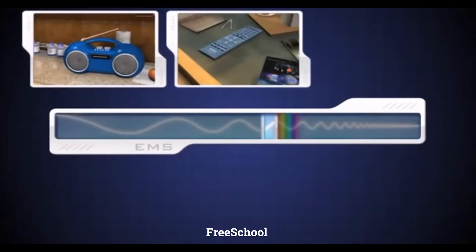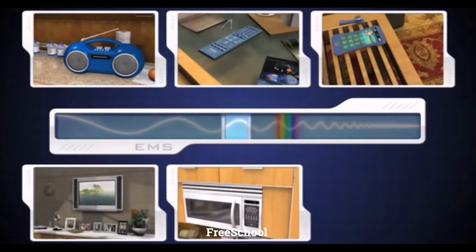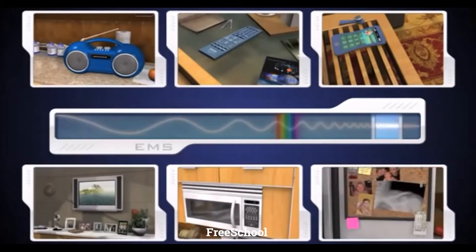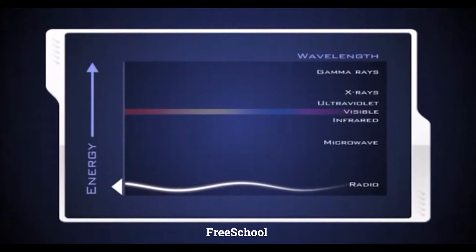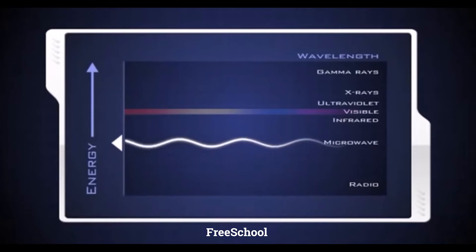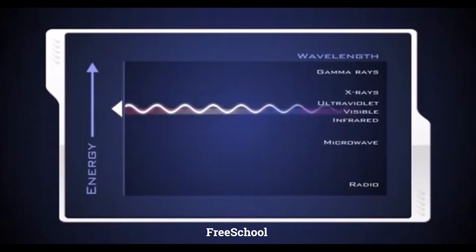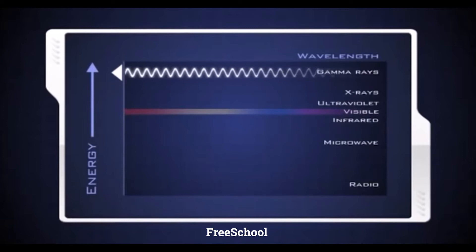All electromagnetic radiation travels in waves, but different types have different wavelengths. The wavelength of electromagnetic radiation, or light, is connected to how much energy it has. Light with a longer wavelength, like radio waves, has less energy, while light with a shorter wavelength, like gamma rays, has more energy.